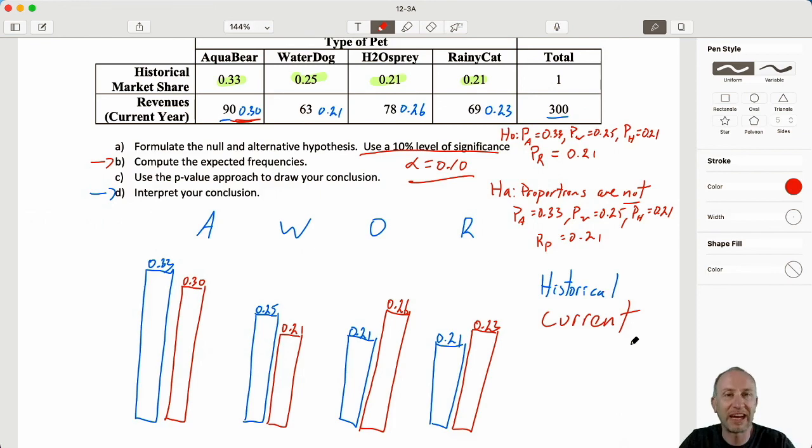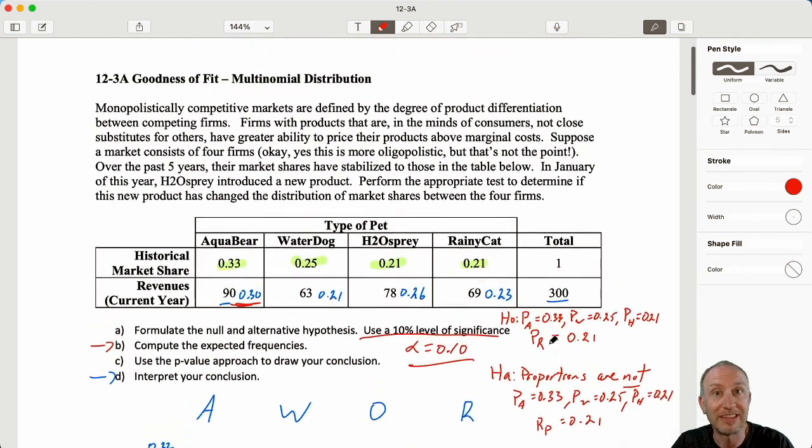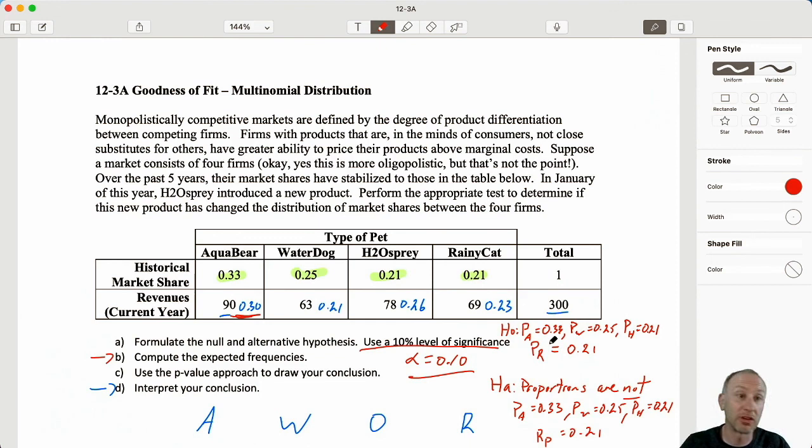Our first exercise on multinomial goodness of fit tests. We're only going to do one more of these because they're very similar to the types of problems that you've seen in previous sections of Module 12. So we'll just do two of these. We'll do one more and we'll go through it fairly quickly I think. Okay, thank you for watching everybody. Bye bye.